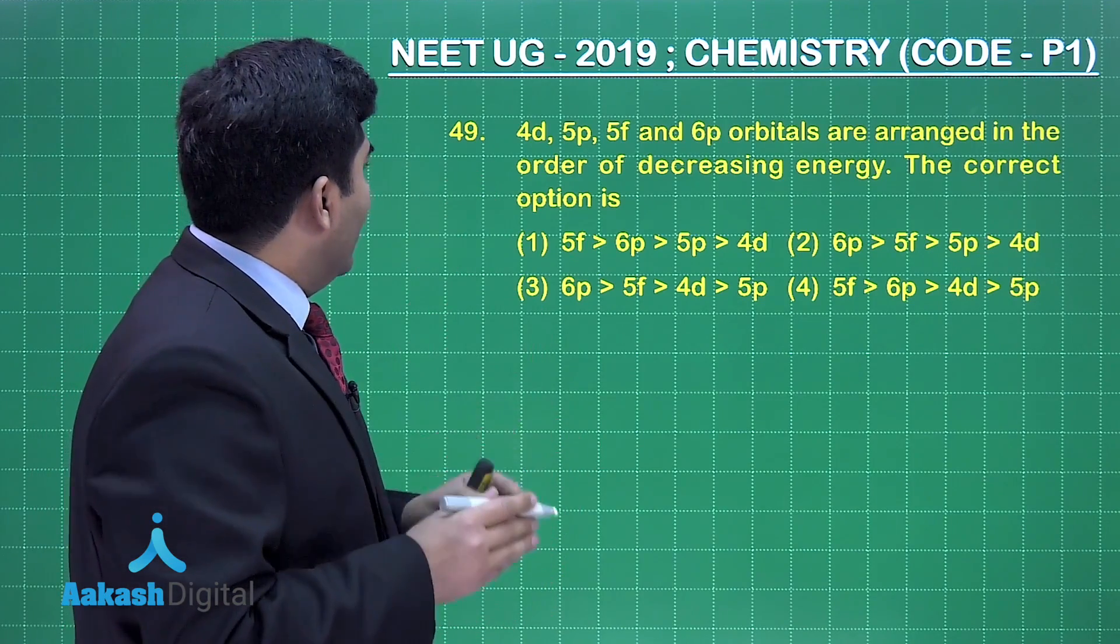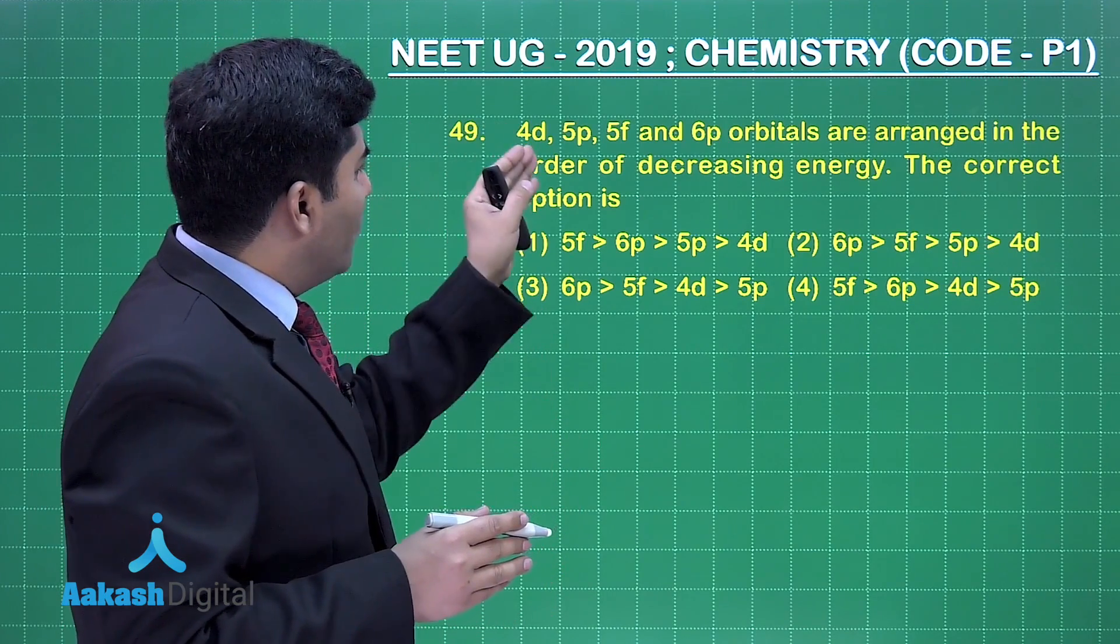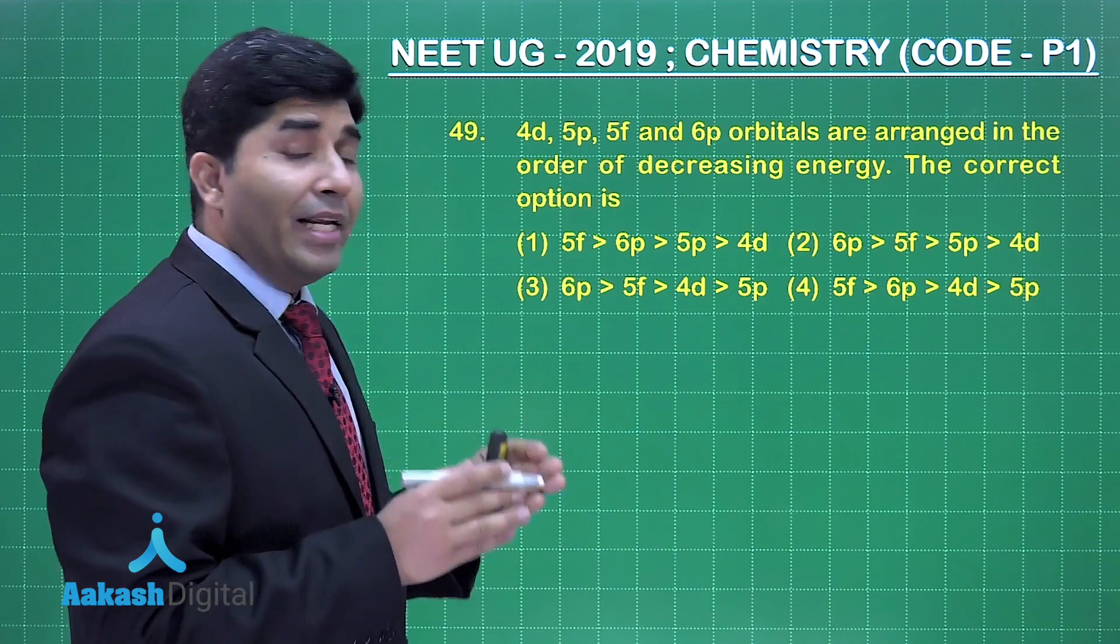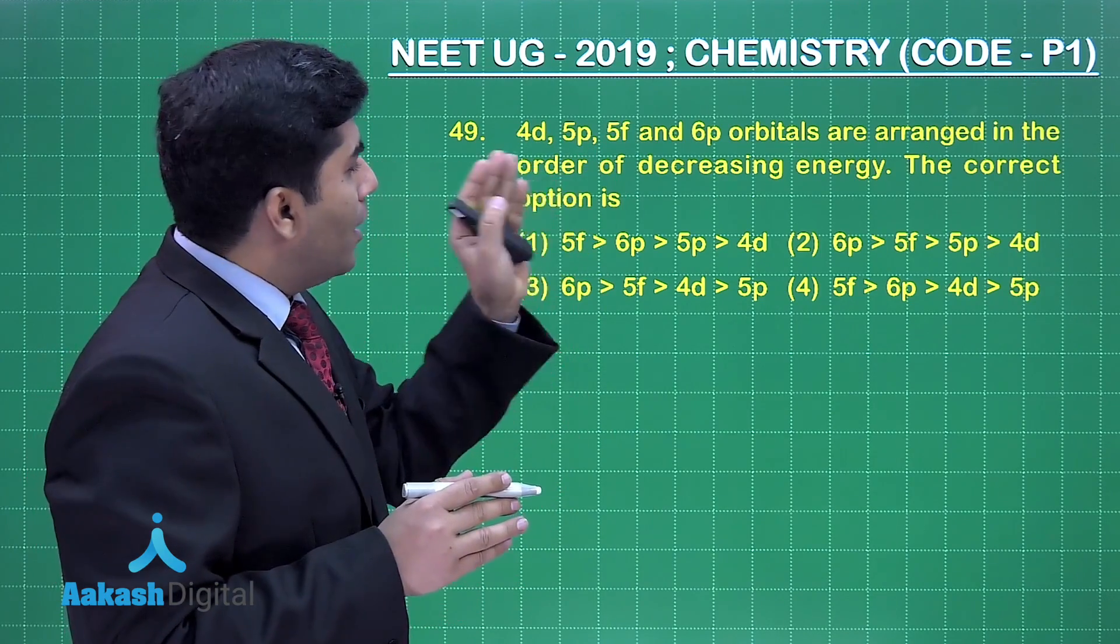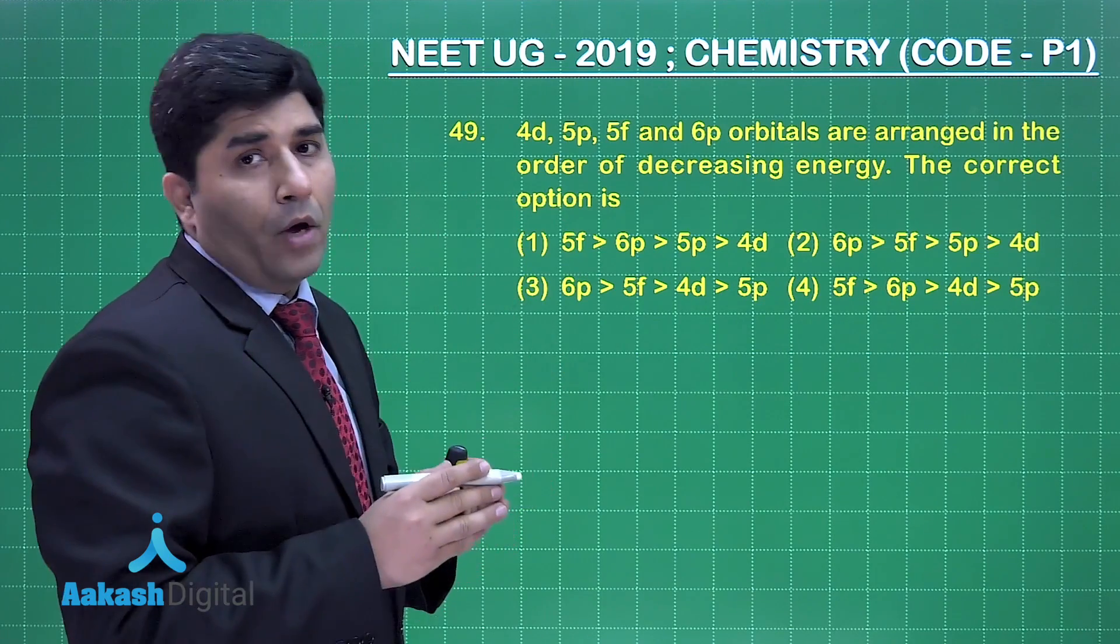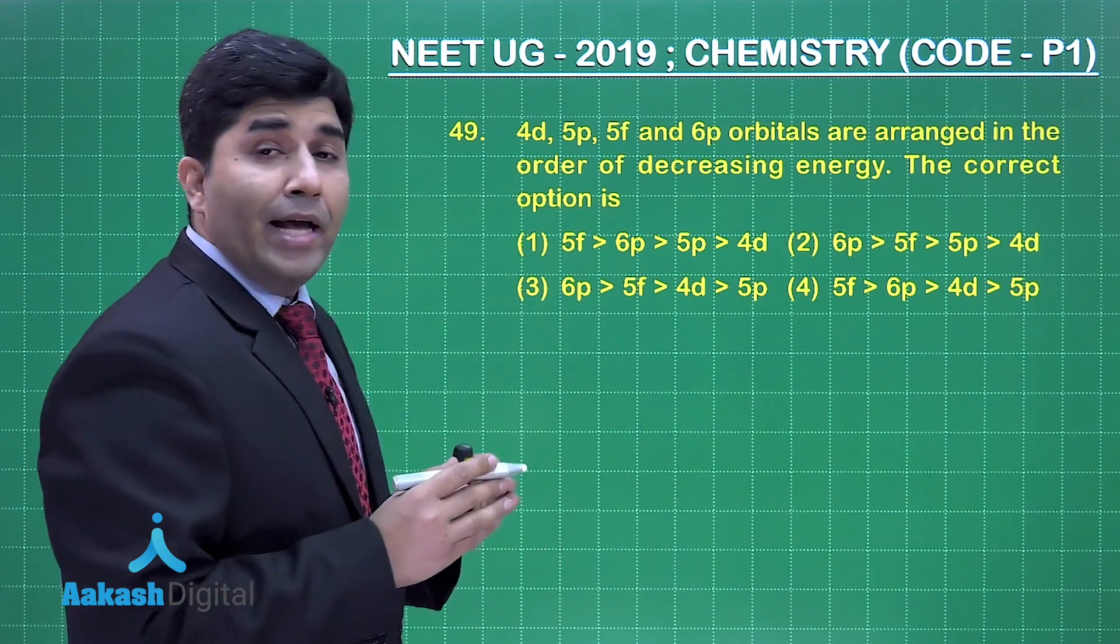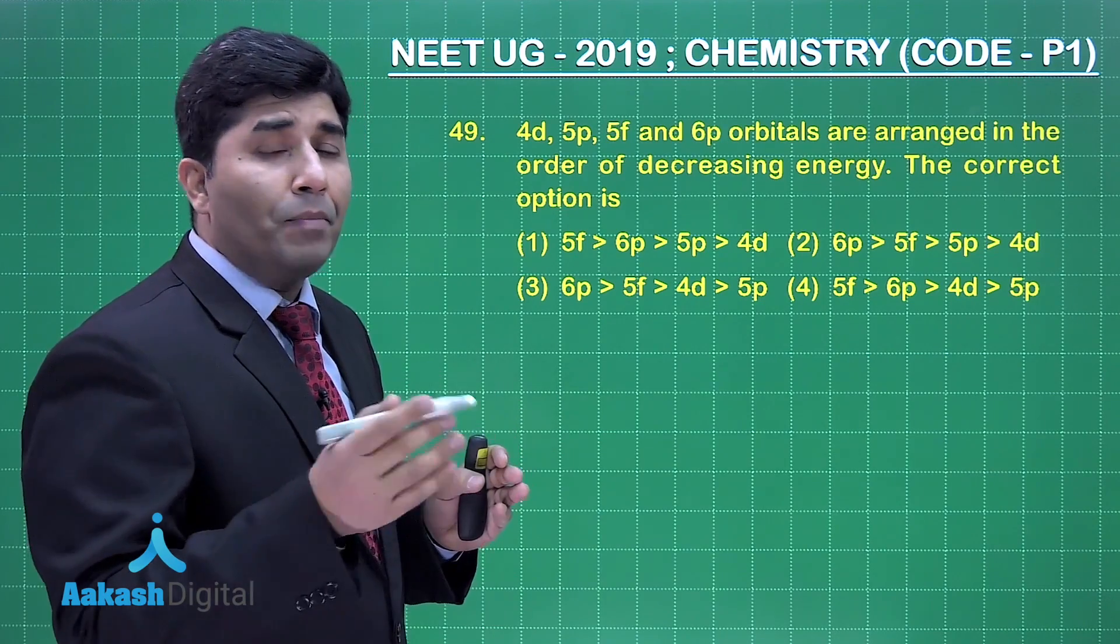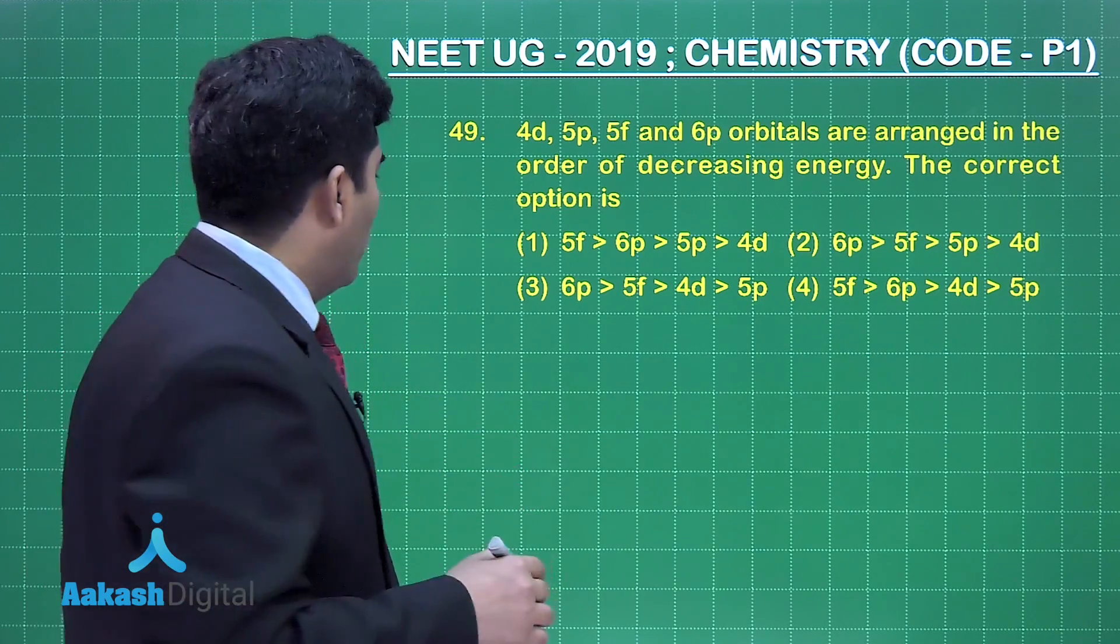Now in this question, 4d, 5p, 5f and 6p orbitals are arranged in the order of decreasing energy. The correct option is... These are the subshells and we have to find out the energy of the subshell first, and we will find that by n+l rule. So let's begin with the solution.